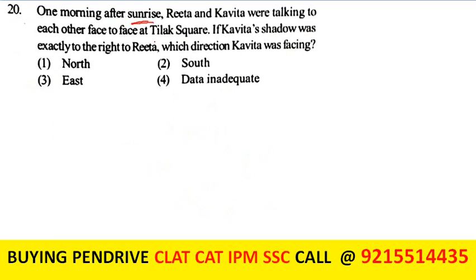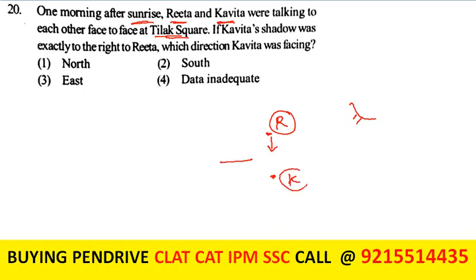One morning after sunrise, Rita and Kavita were talking face to face. Kavita's shadow was exactly to the right of Rita. Since it is morning, the sun is in the east and shadows fall to the west. If the shadow (west) is to Rita's right, Rita is facing south. Since they face each other, Kavita is facing north. That becomes the answer.